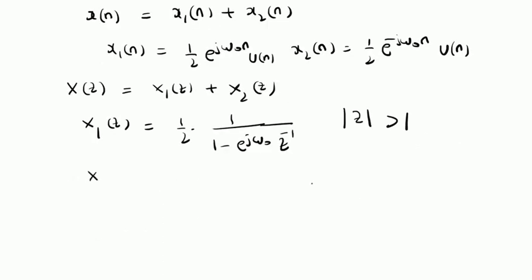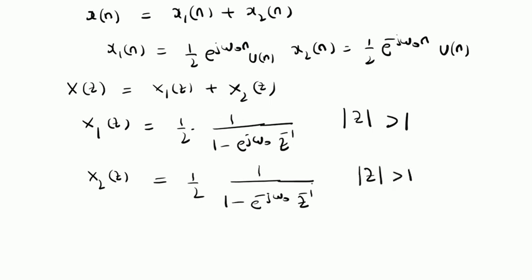The Z-transform of the second component X2(z) equals 1/2 times 1/(1 - e^(-j omega naught) z^(-1)). Here, alpha is e^(-j omega naught), and therefore the ROC is also the same: |z| > 1. To find the overall Z-transform, we simply add these two Z-transforms.